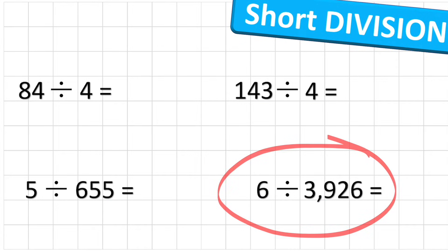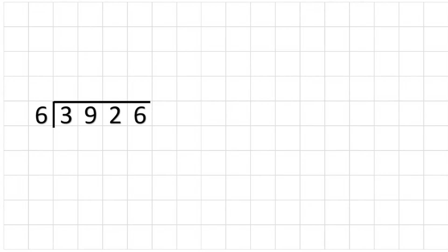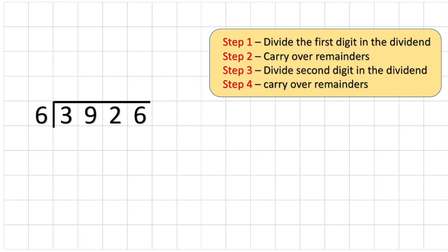Okay, let's look at our very last question. We have this one here, 3926 divided by 6. Okay, so first step, set it up into my bus stop again. 3926 goes inside the bus stop, six on the outside, and the same steps to follow.